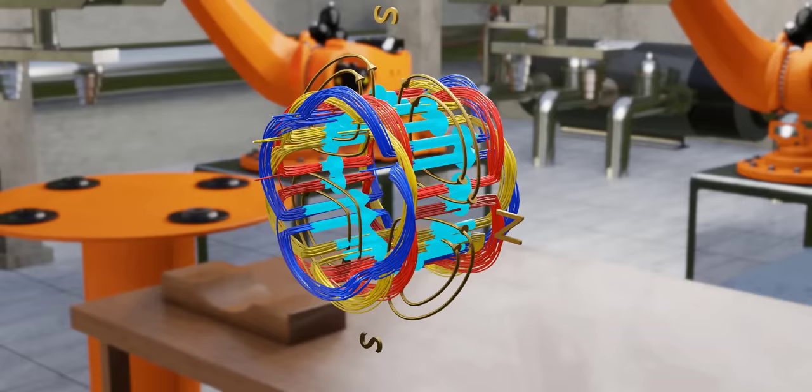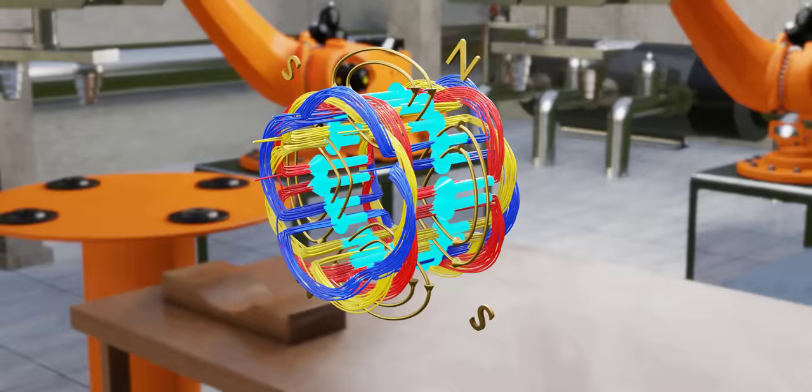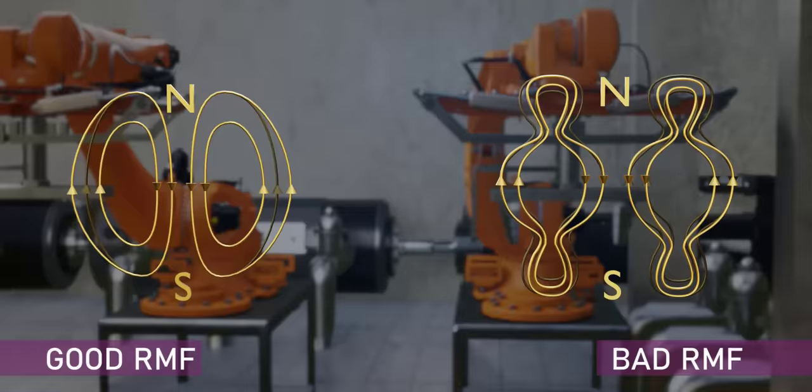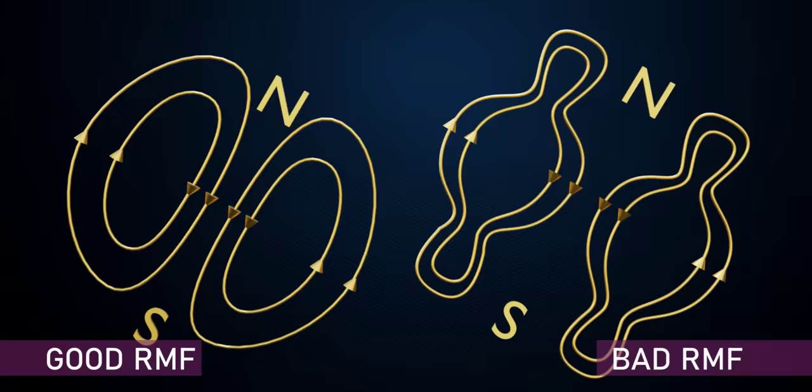Before starting a winding design, we should first understand the qualities of a good RMF. An RMF should have a smooth shape, as shown. It should not get distorted during its rotation. And third, the central flux lines should be perfectly radial.